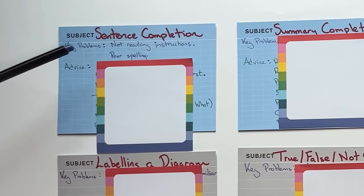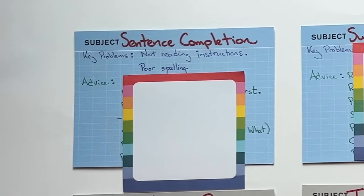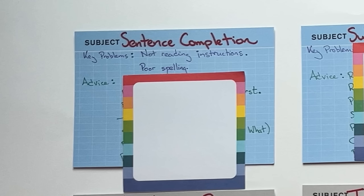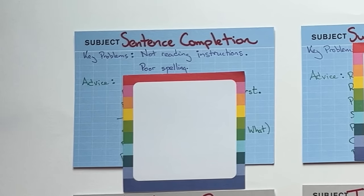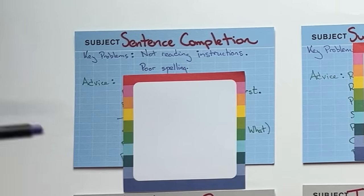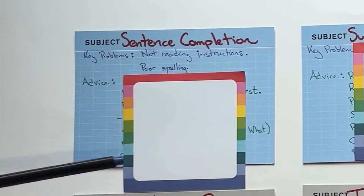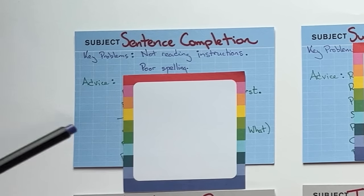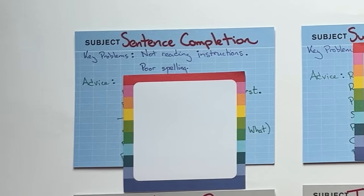For sentence completion questions, the two key problems are: not reading the instructions — especially about the number of words — and poor spelling. Not reading the instructions is something many students struggle with, and it's an easy fix: get into the habit of really paying attention to the instructions. Poor spelling is an issue because you're not picking A, B, C, or D — you actually have to take words from the text and write them out. If one letter is wrong, the whole answer is wrong.